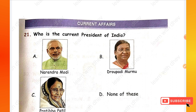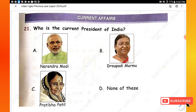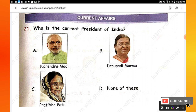Question 21: Who is the current president of India? Option A is Narendra Modi, option B is Droupadi Murmu, option C is Pratibha Patil, option D is none of these. The right answer is option B — Droupadi Murmu.